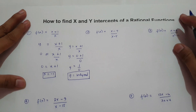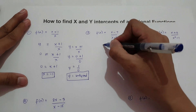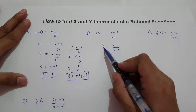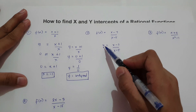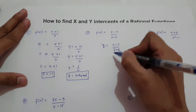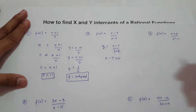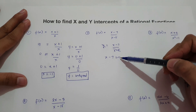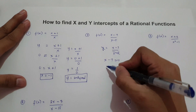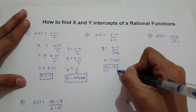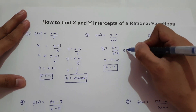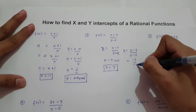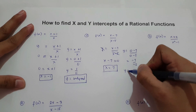What about number 2? We have y = (x − 7) / (x − 5). To find x intercept, if we change y to 0 and multiply by the denominator, we simply equate the numerator to 0. So x − 7 = 0, giving x equals positive 7. To find y intercept, substitute x = 0: (0 − 7) / (0 − 5) = negative 7 over negative 5. Negative divided by negative is positive, so our y intercept is 7 over 5.